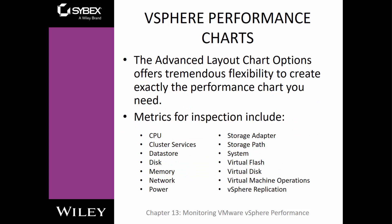Metrics you can have within your charts include: CPU, cluster service, data store, disk, memory, network power, storage adapter, storage path, systems, virtual flash, virtual disk, virtual machine operations, and vSphere replication. What's interesting is each of these also have subcategories, like disk latency — things of that nature. There's lots of flexibility and lots of different metrics you can use.